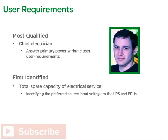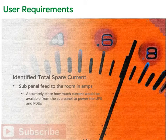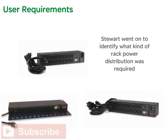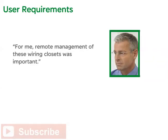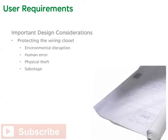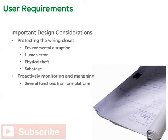Stewart first identified the total spare capacity of the electrical service entrance by identifying the preferred source input voltage to the UPS and the PDUs. Next, he identified the total spare current of the subpanel feed to the room in amps, so he could accurately state how much current would be available to power the UPS and PDUs. Finally, Stewart identified what kind of rack power distribution was required. Remote management of these wiring closets was important — he wanted to monitor how much power was going into the rack and wanted control over power going into individual rack outlets. For this reason, Stewart recommended that power be distributed via a switched rack power distribution scheme.